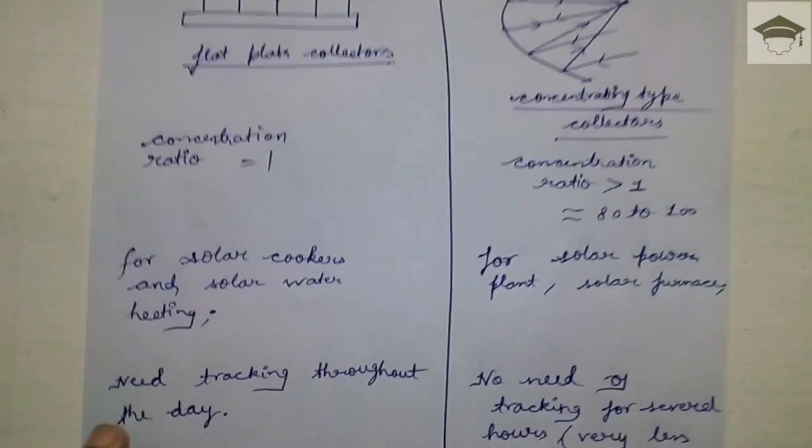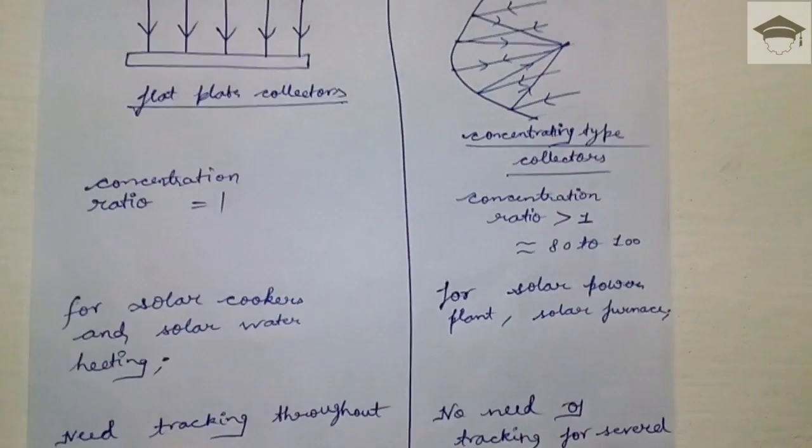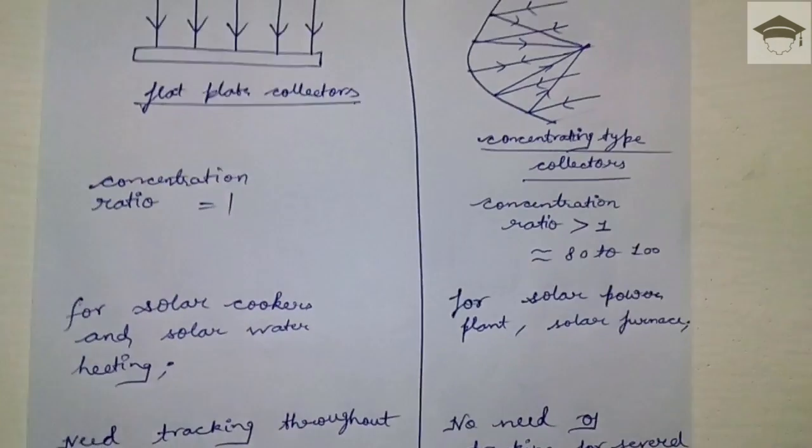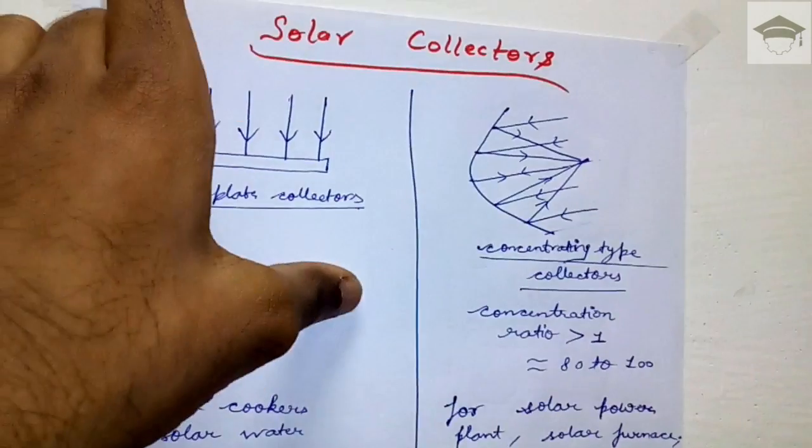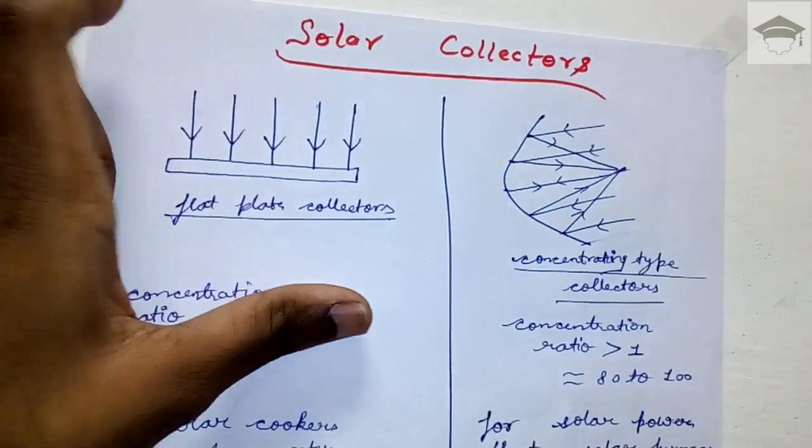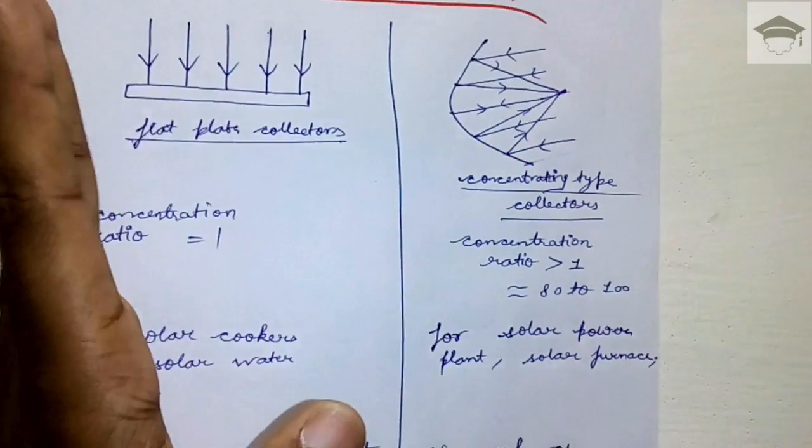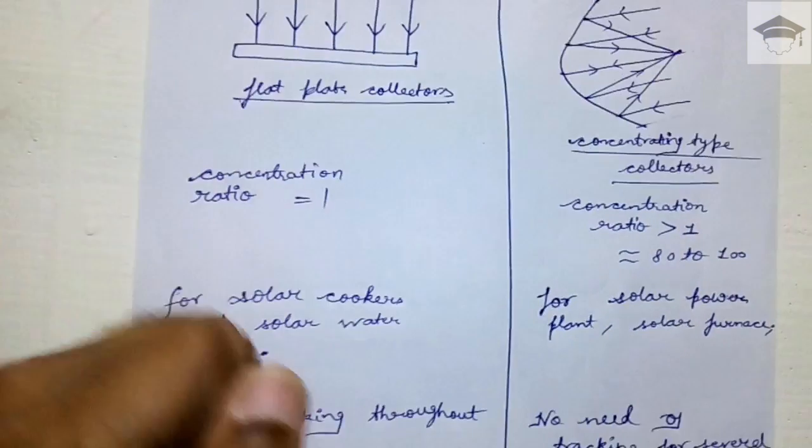Concentrating collectors follow the sun and always focus the sun's rays to a particular point at the focus of the parabola. So tracking is much easier in concentrating type collectors.